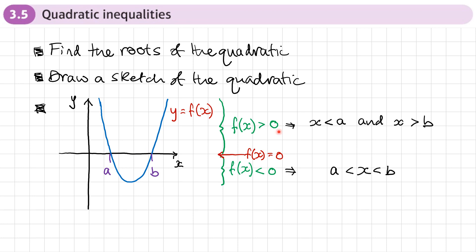So the actual solutions for this particular quadratic: for f(x) greater than zero, that will be when x is less than A — so x less than A, that's this part of the quadratic — and x greater than B, so that's this part. For the other part at the bottom, the solution is between A and B, so x is between A and B. I can write it as a single inequality, and that's going to be this part of the graph down here.